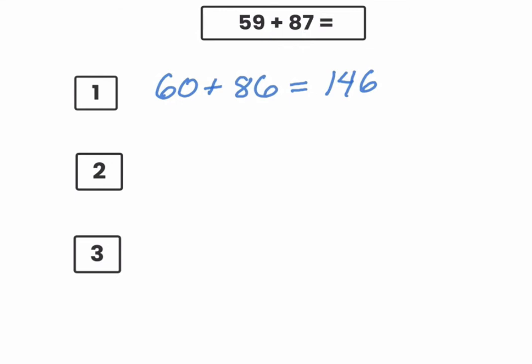Another way I can do that is basically the opposite. I can move some from 59 over to 87. 87 is 3 away from 90. So if I take 3 from 59, which would be 56, I would change 87 to 90. And once again, I'm adding my ones. 6 plus 0 is 6, and 50 plus 90 is 140.